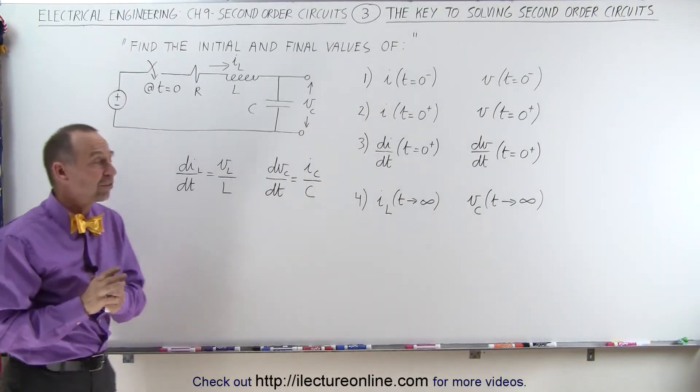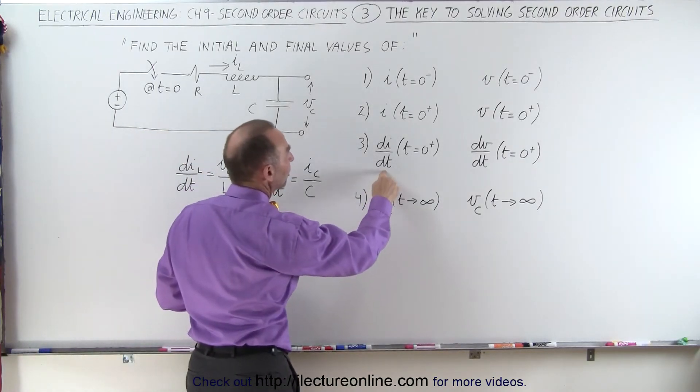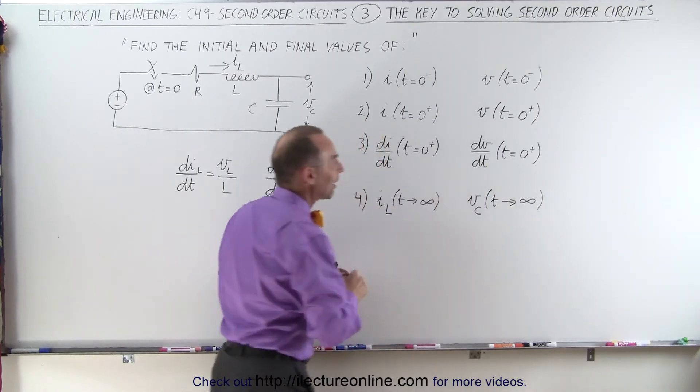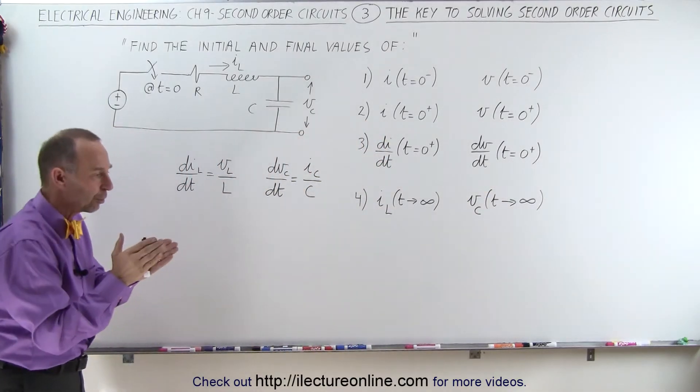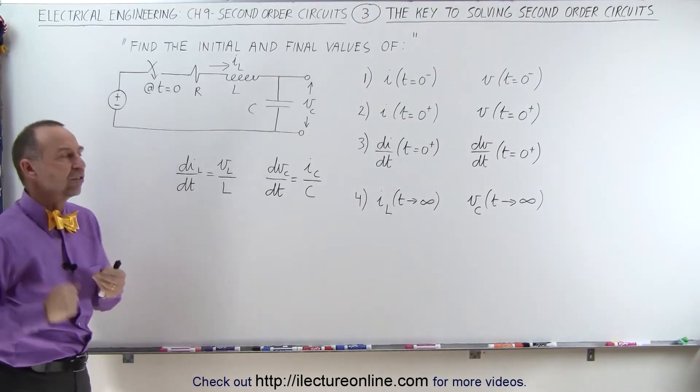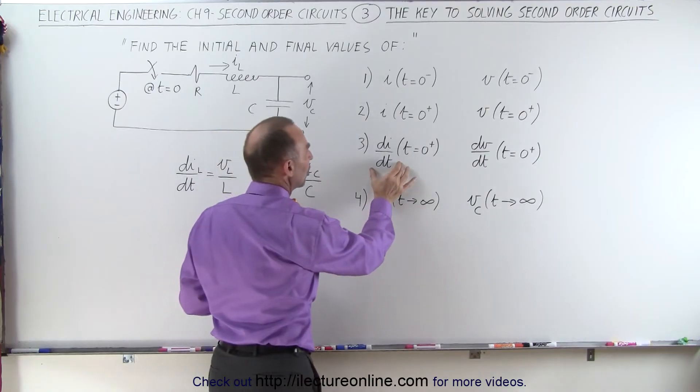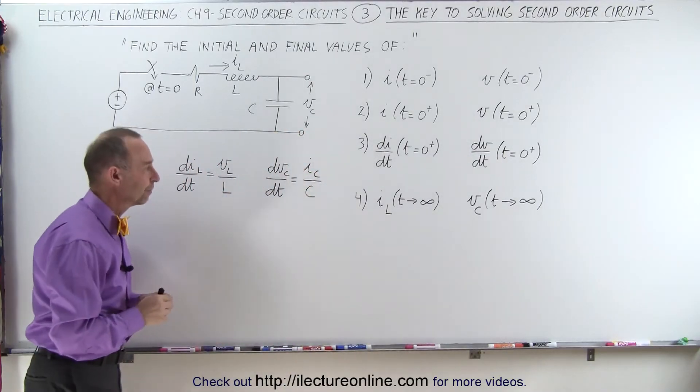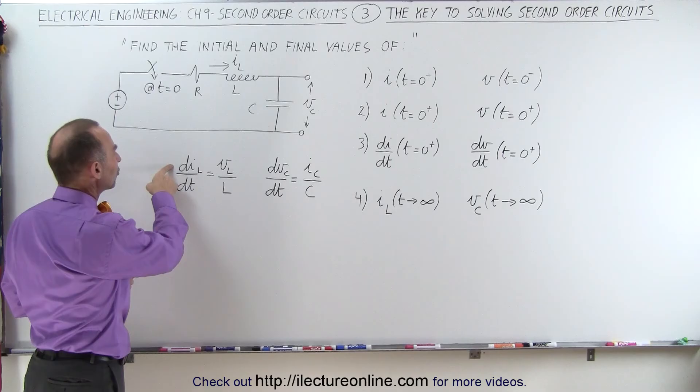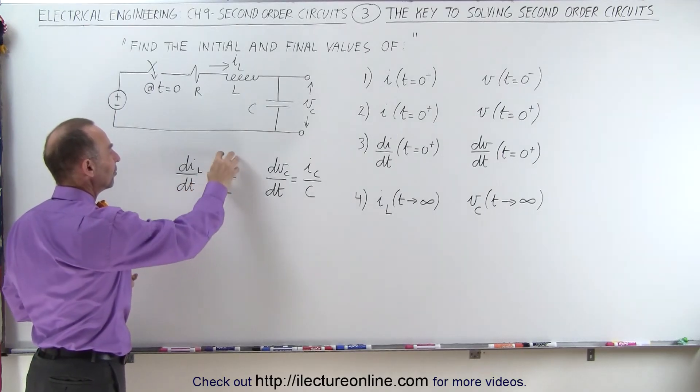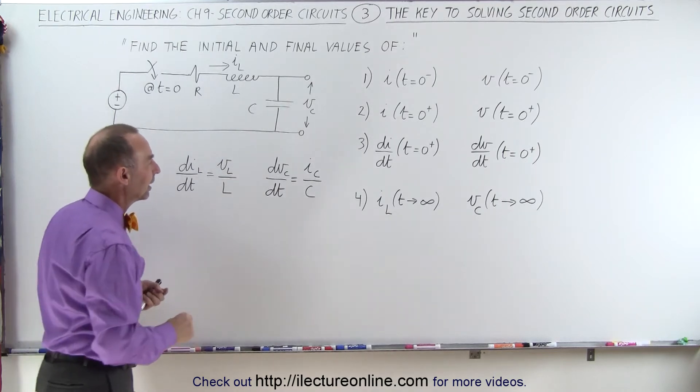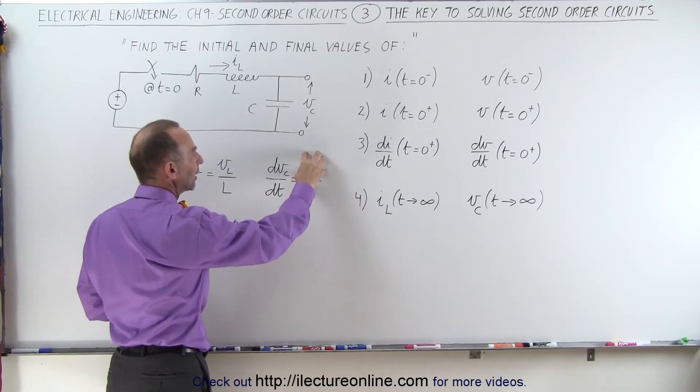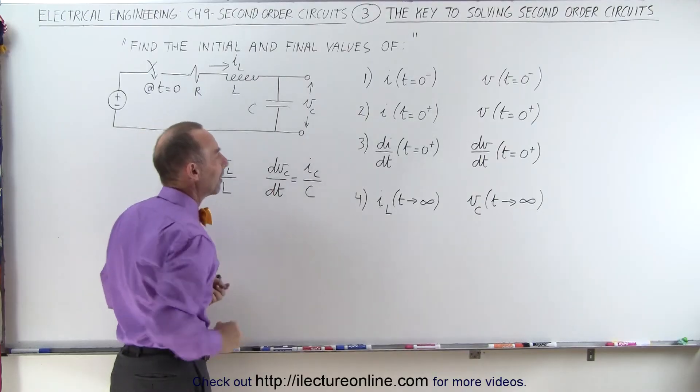What we want to do next is establish the change in the current with respect to time inside the inductor and the change of the voltage with respect to time across the capacitor during the transient period. There will be a period where we go from the initial state to the final steady state. And during that transient period, we want to be able to calculate the change in the current and the change in the voltage. Again, at the very moment the switch is closed. What's happening at that very moment? And keep in mind that to find the rate of change of the current with respect to time for the inductor is the instantaneous voltage across the inductor divided by the inductance, and the instantaneous change of the voltage across the capacitor with respect to time is equal to the instantaneous current towards the capacitor divided by the capacitance.